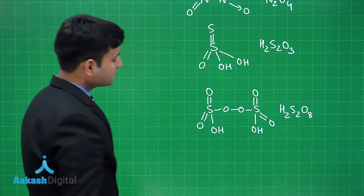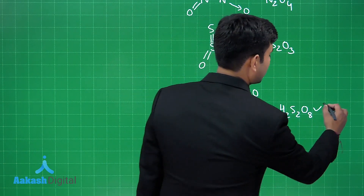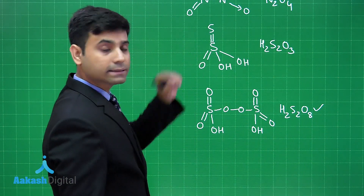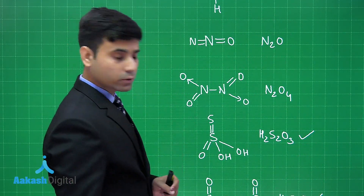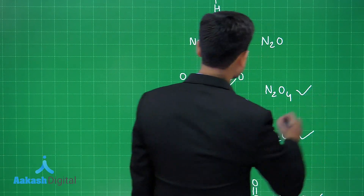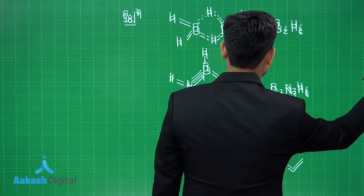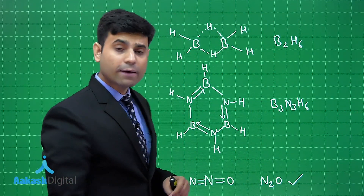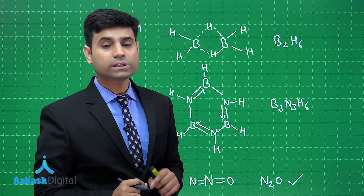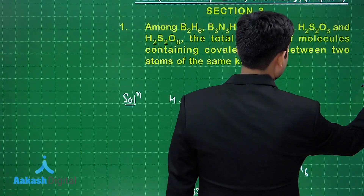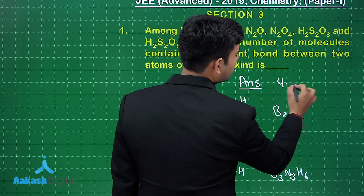We can see here we have a bond between oxygen and oxygen, here a bond between sulfur and sulfur, here a bond between nitrogen and nitrogen, and here also a bond between nitrogen and nitrogen. In the remaining two molecules we do not have a bond between atoms of the same type. So the correct answer for this question is 4, written as 4.00.